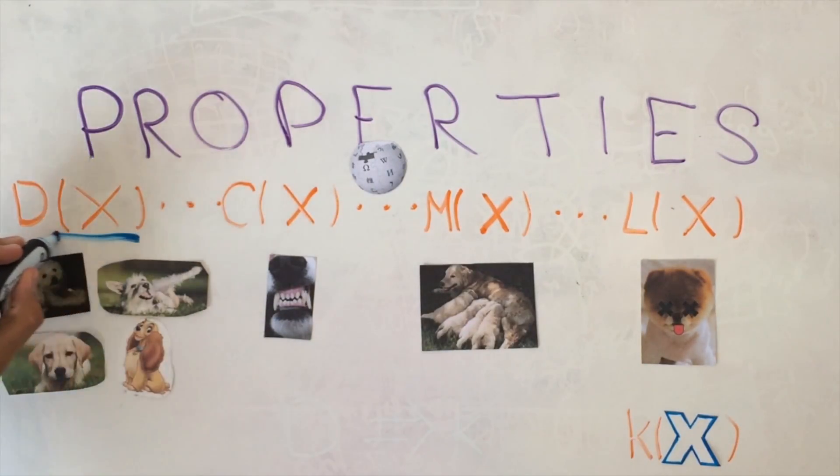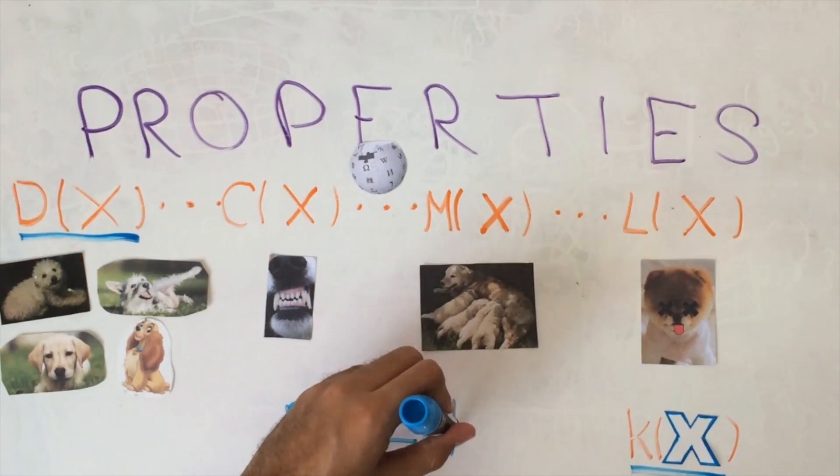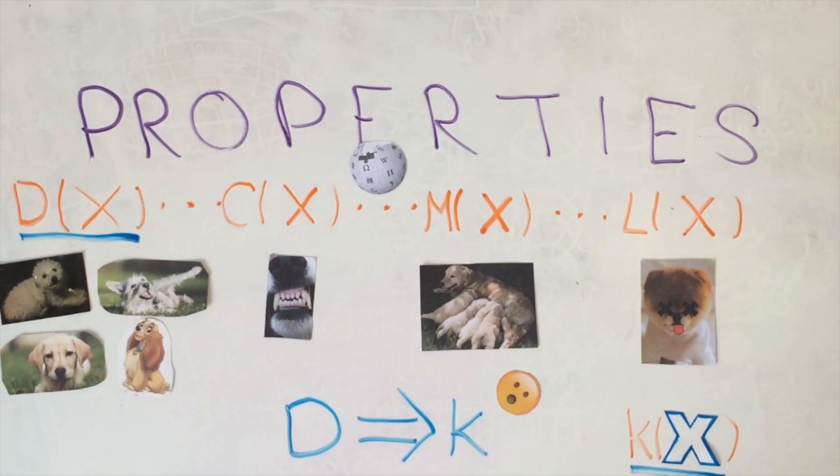Hence, assuming X is a dog, we have concluded that X can kick the bucket. In other words, the property of being a dog implies the property of being able to kick the bucket. Can you see it?